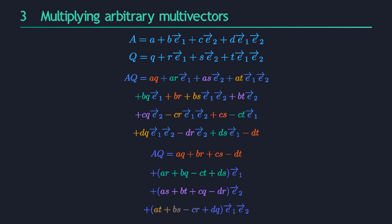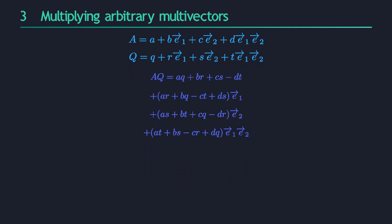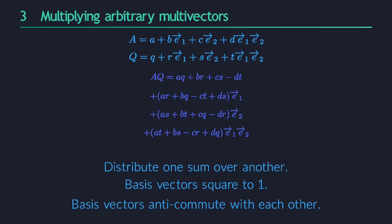This is the final answer, the most general formula for the product of two multivectors in our algebra. So you see, it's actually really easy. You only need to know three things. Sums can be distributed over each other. The square of a basis vector is 1. And the product between two different basis vectors anti-commutes. And that's all there is to it. Thanks to linearity, we only have to know what happens to the basis vectors. Everything else is just simple algebraic manipulation.